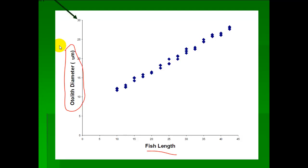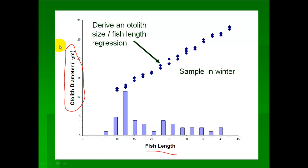And so we have a regression for the otolith size against the fish length. Now we're going to do this in winter because we know that's when the annuli are laid down, so that we know that the annuli are laid at the very edge of the otolith when we're sampling.